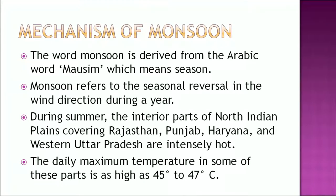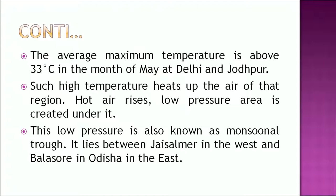Now what is the mechanism of monsoon? The term monsoon is derived from the Arabic word 'mausum' which means season. It refers to the seasonal reversal in wind direction during a year. During summer, the interior part of north Indian plains covering Rajasthan, Punjab, Haryana, and western Uttar Pradesh are intensively hot — daily maximum temperatures can be as high as 45 to 47 degrees centigrade. Such high temperature heats up the air of that region; hot air rises, and a low pressure area is created under it, known as the monsoonal trough.